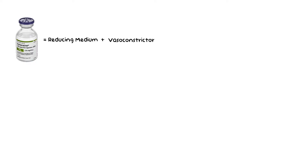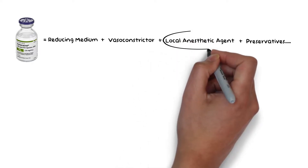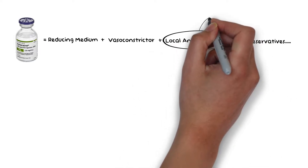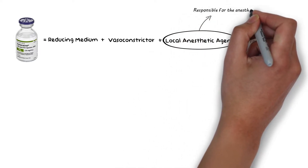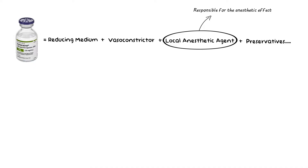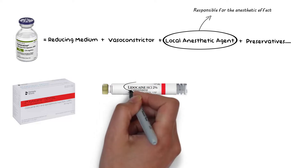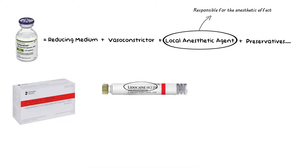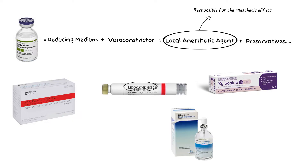A local anesthetic is generally made up of different combinations of compounds, but every local anesthetic has a local anesthetic agent that achieves that anesthetic effect. The most widely used dental cartridge, under the brand name Xylocaine, has Lidocaine as its local anesthetic agent. It is also available in gel form as well as in a spray form, and all of them serve various purposes.